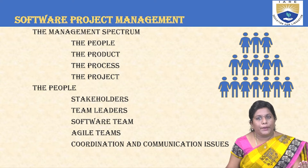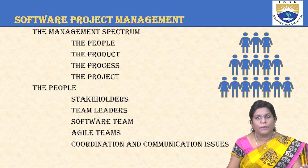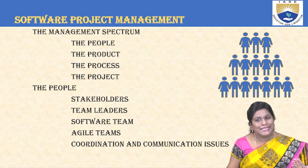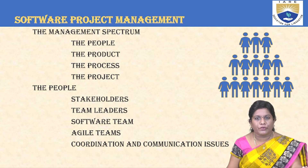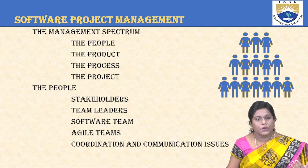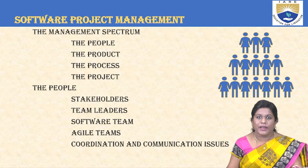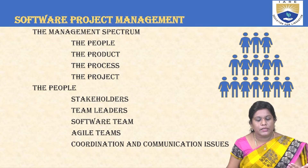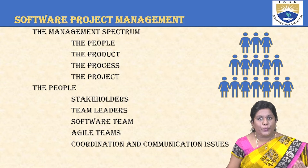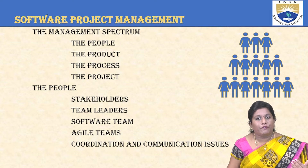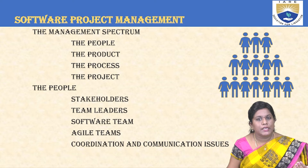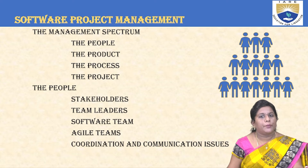The management spectrum is like a band of colors, and the management committee holds all four things together: people, product, process, and project. When you consider people, we start off with stakeholders — their tasks, duties, responsibilities, inputs, and considerations. We'll also discuss team leaders, software team, agile teams, and their coordination and communication issues. These are the five major things studied under the category of people.